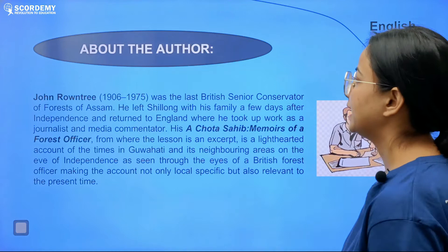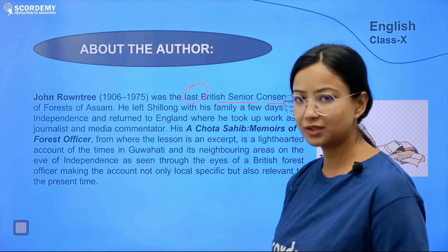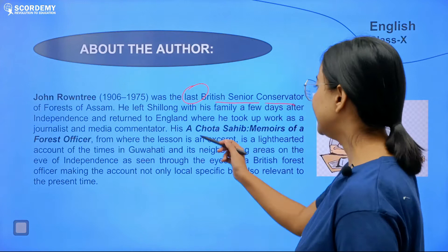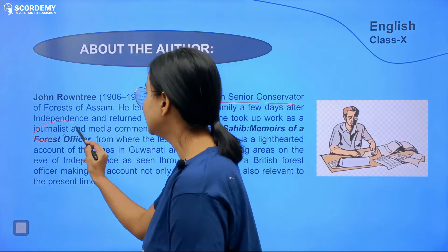He was a British colonial officer — the last British senior conservator of forests of Assam. He left Shillong, which was still part of Assam at that time, with his family a few days after India achieved independence. Roundtree returned to England where he took up work, later becoming a journalist and media commentator.